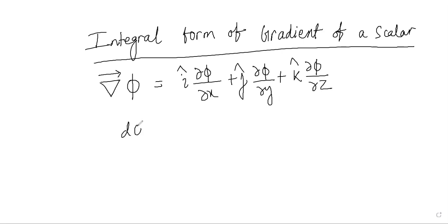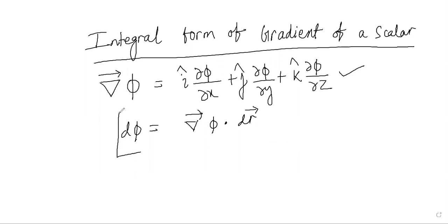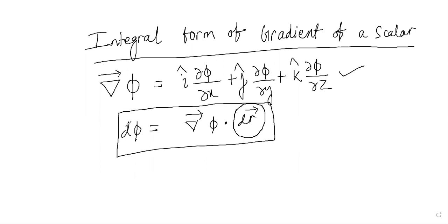To explain the physical significance, we showed that d phi equals del phi dot dr, where dr is the differential position vector given by i-cap dx plus j-cap dy plus k-cap dz. So if there is a change in the space coordinates, the scalar function phi will also change accordingly. This is how we understand the physical significance of del phi, the gradient of phi.